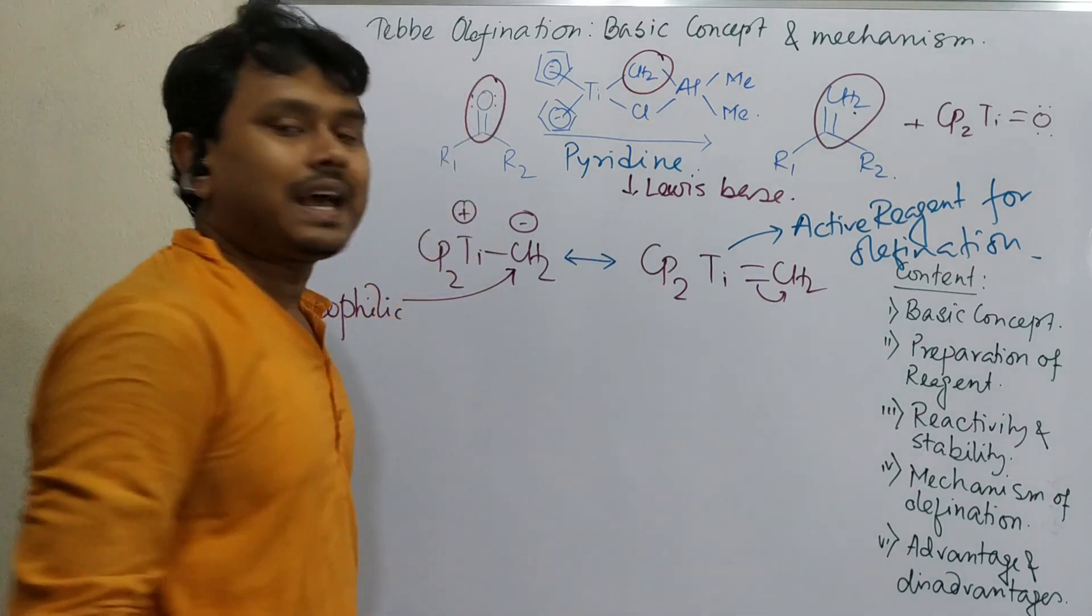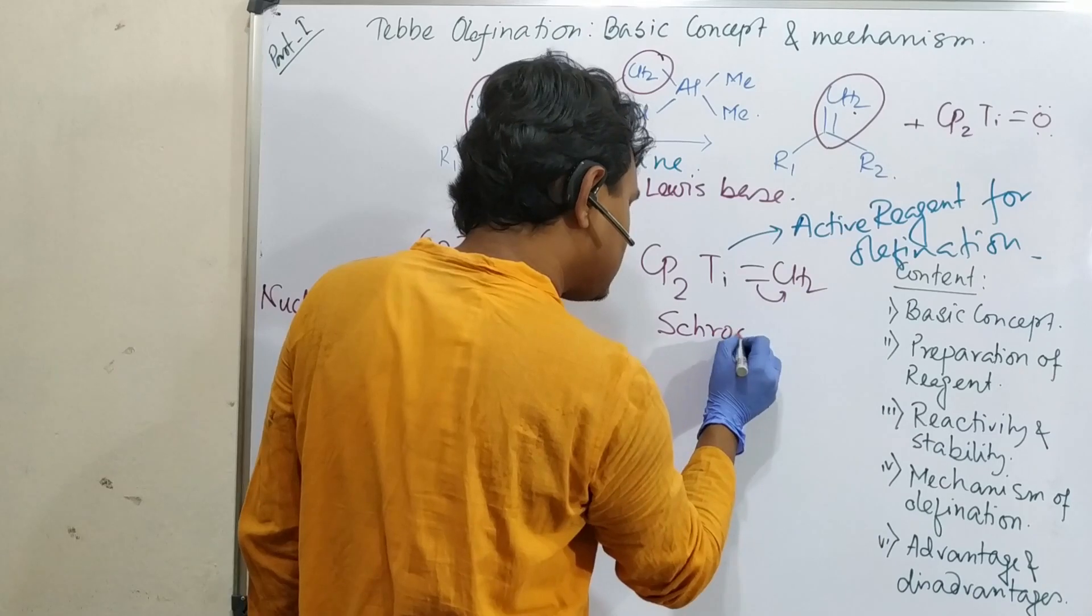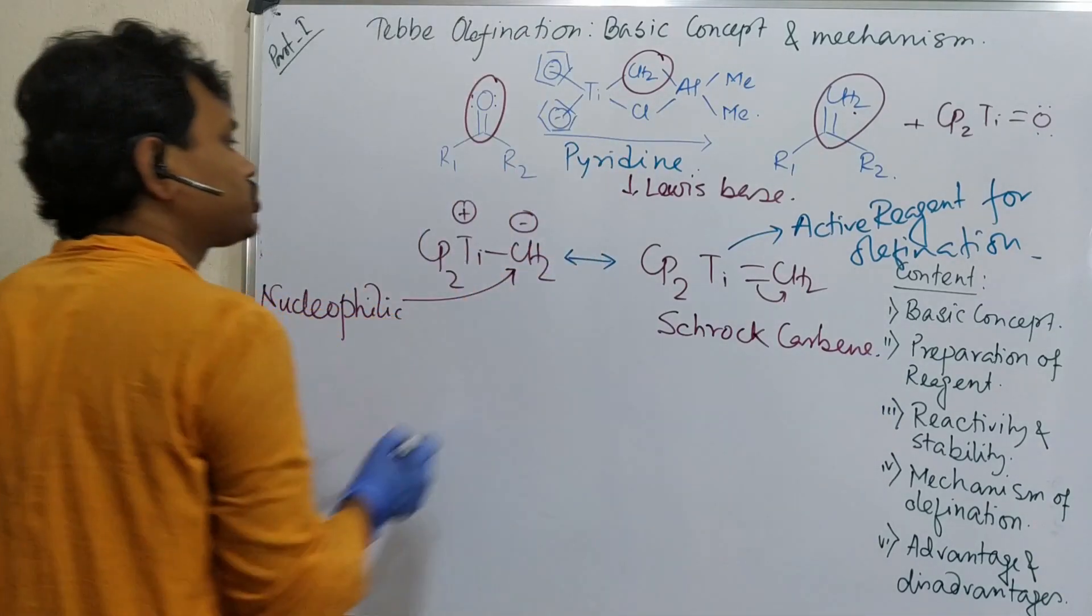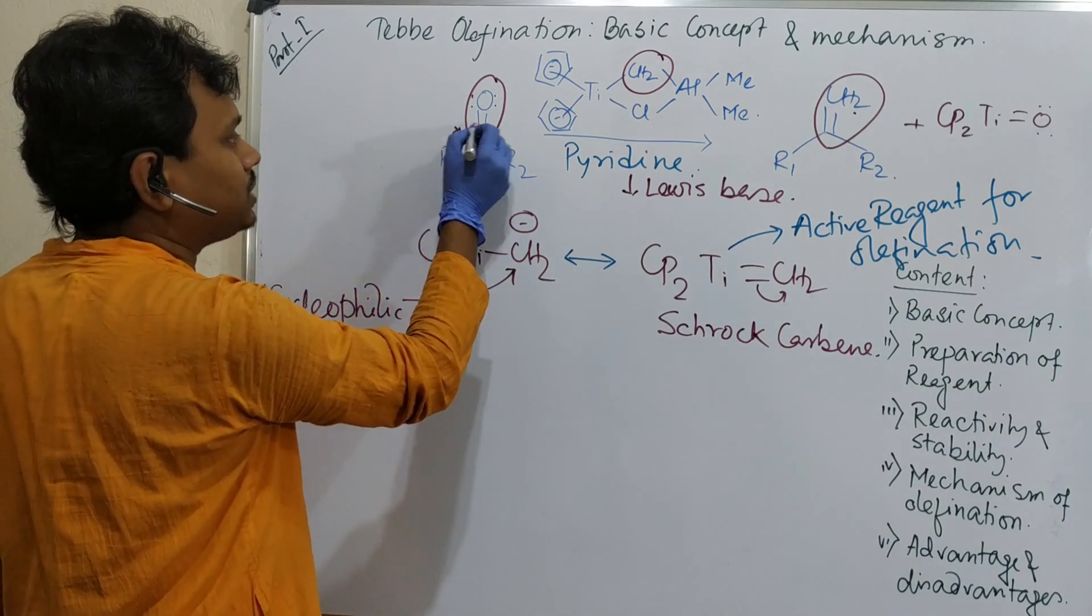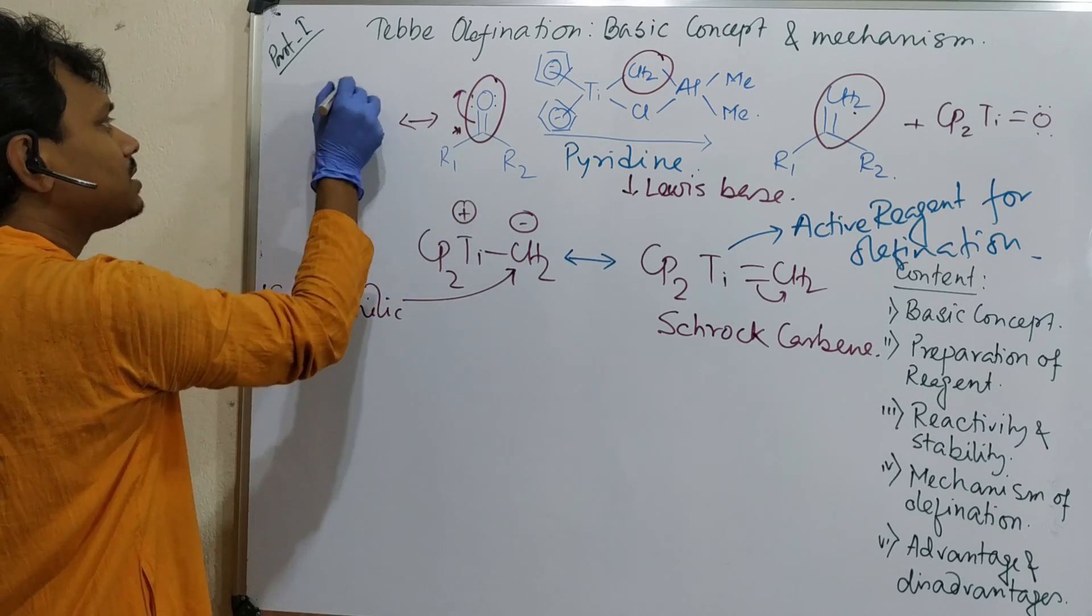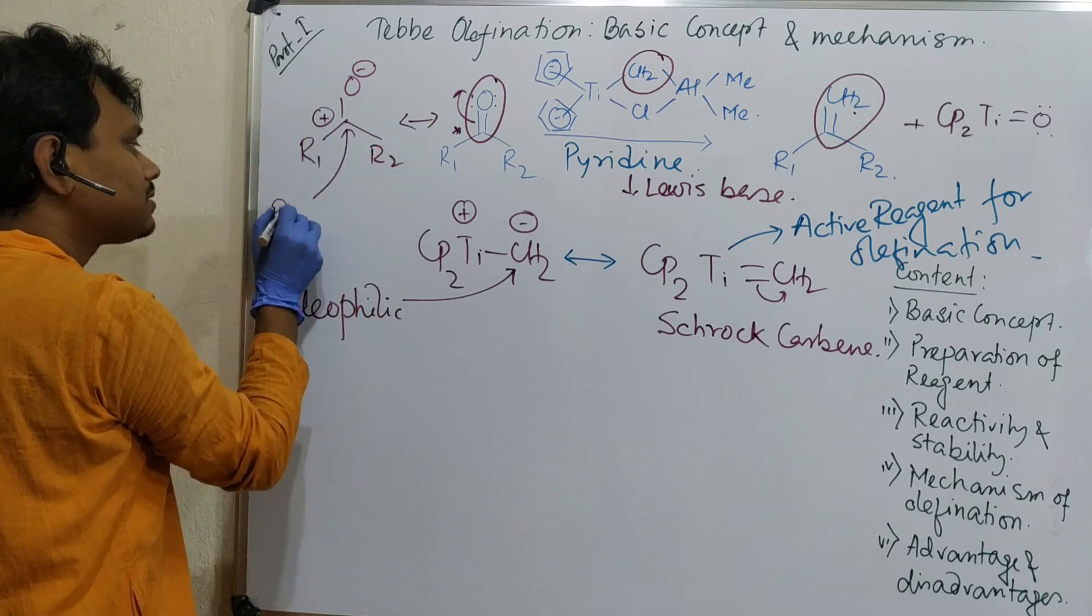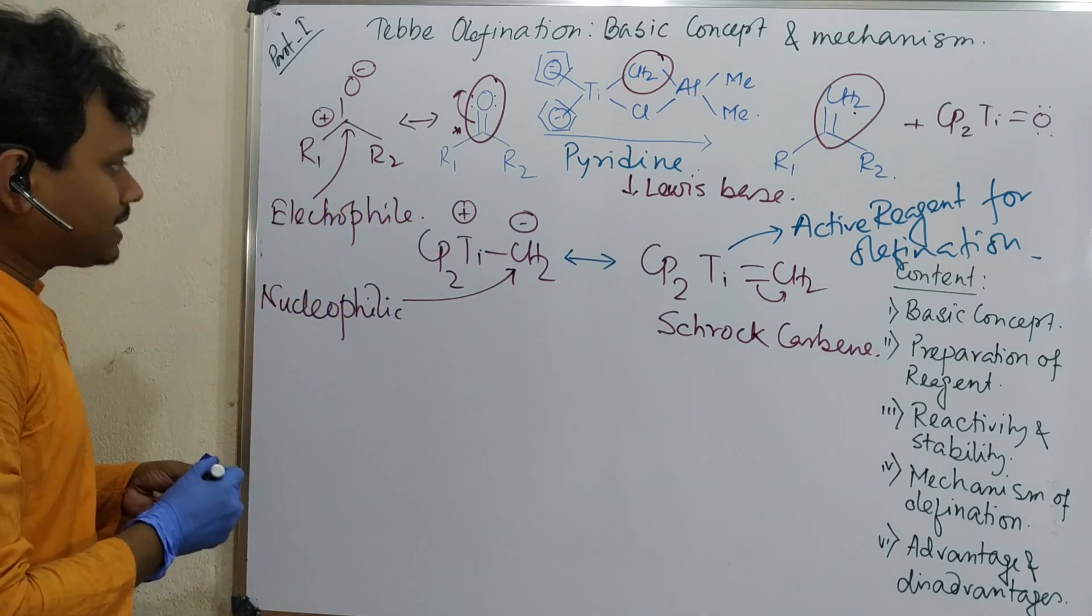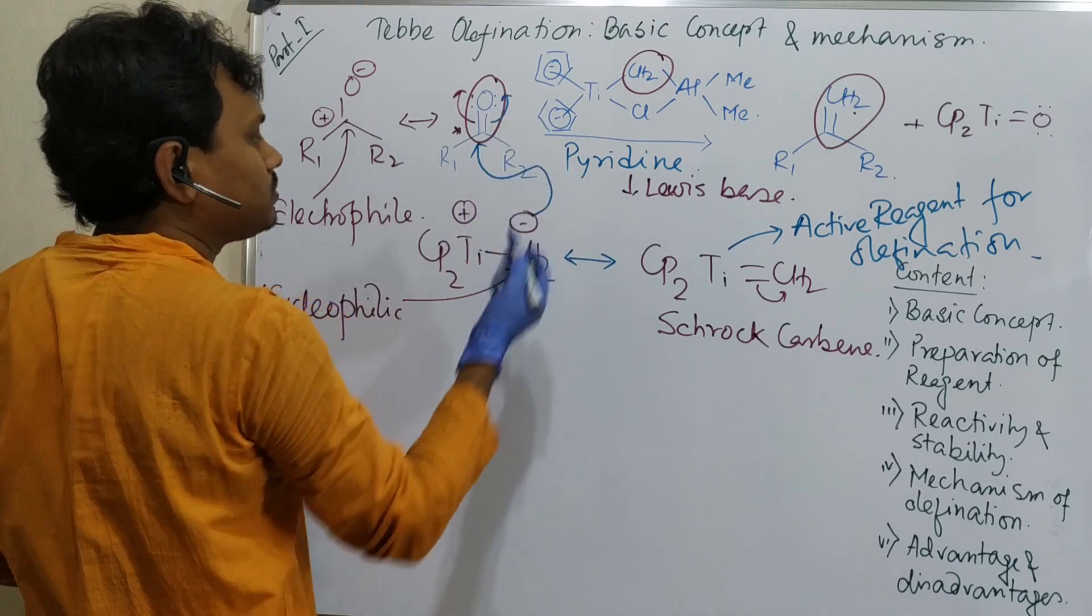And this thing you can consider as a Schrock carbene. Like Fischer carbene, Schrock carbene, S-C-H-R-O-C, I am not sure about the spelling. If you confuse please check from literature. So this is a Schrock carbene. So this is actually nucleophilic agent. And this center, carbonyl, carbonyl has a canonical form, that is it will go up and it will result plus. This is minus R1 R2. So this is electrophilic center. Electrophilic. So what happens? This reagent, this one react with this center and it opens up.